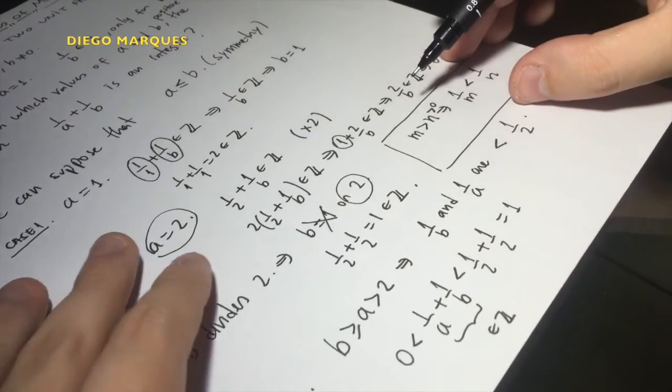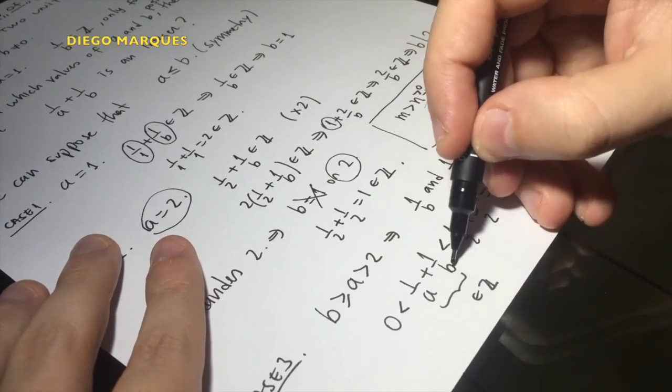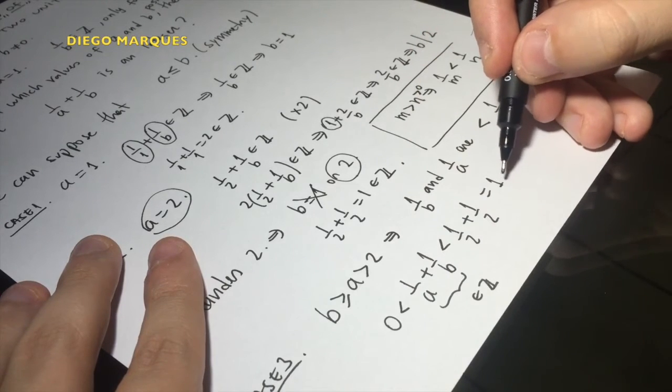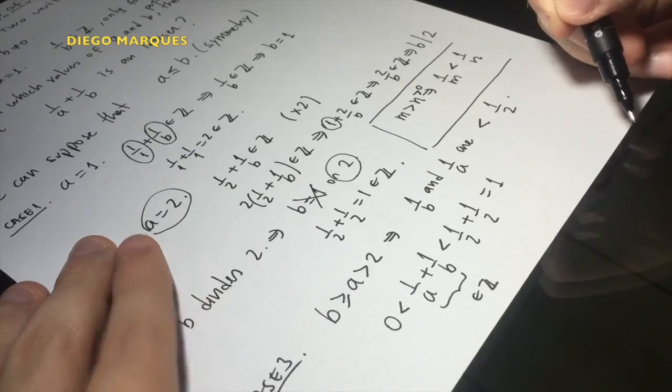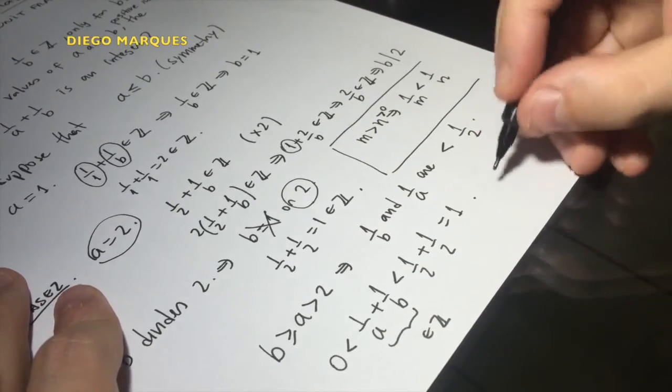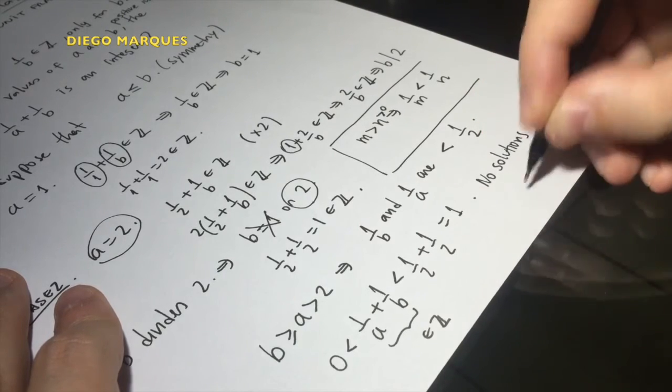But this should be an integer. So we arrive at an absurdity because 1 over a plus 1 over b is an integer between 0 and 1, and this cannot hold. So case 3 doesn't provide any solution. No solutions in this case.